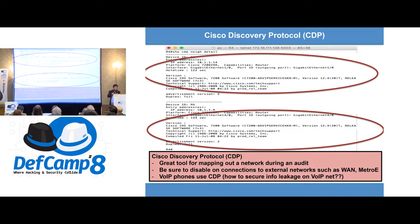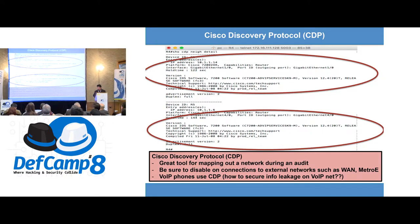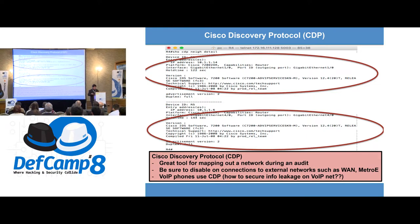As an old-school network engineer with over 20 years' experience in routing and switching — service providers, telcos, enterprise — one protocol we use especially in consulting is CDP, the Cisco Discovery Protocol. On non-Cisco networks, we use LLDP to map out the network, see what the neighbors are, who's connected to who, whether we're connected to a router, switch, or phone, and map out the customer network, because whatever drawings they give us, we know they're going to be wrong.